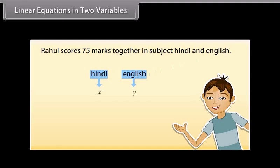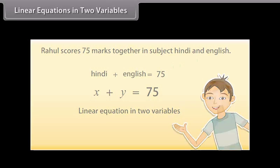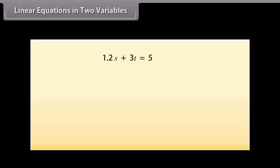Let us use X and Y to denote them. The marks scored in Hindi is X and the marks scored in English is Y. So X plus Y is equal to 75 is the required equation. This is an example of a linear equation in two variables. Some other examples are: 1.2S plus 3T is equal to 5; P plus 4Q is equal to 7; and 3 is equal to 2X minus 7Y.